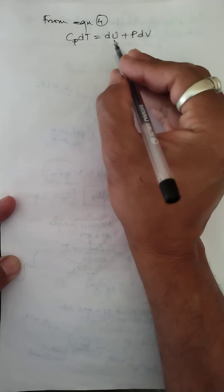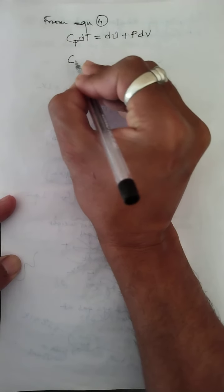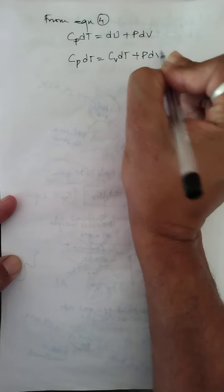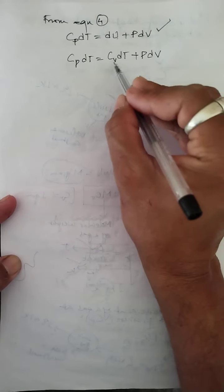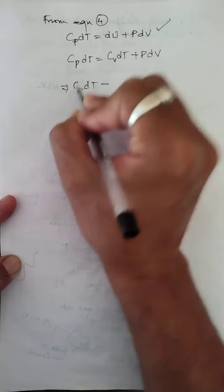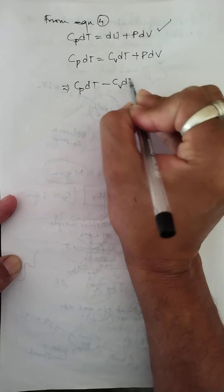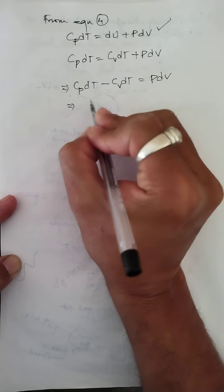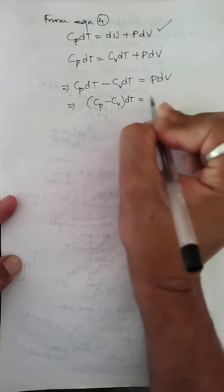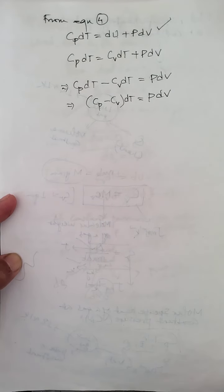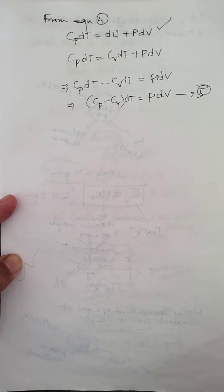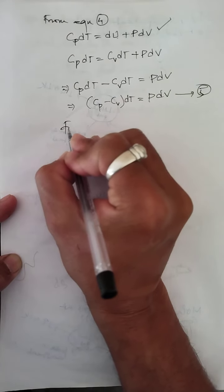Replacing dU by Cv · dT from equation three into equation four: Cp · dT = Cv · dT + P · dV. Taking Cv · dT to the left-hand side: Cp · dT − Cv · dT = P · dV. Factoring out dT: (Cp − Cv) · dT = P · dV — equation five.